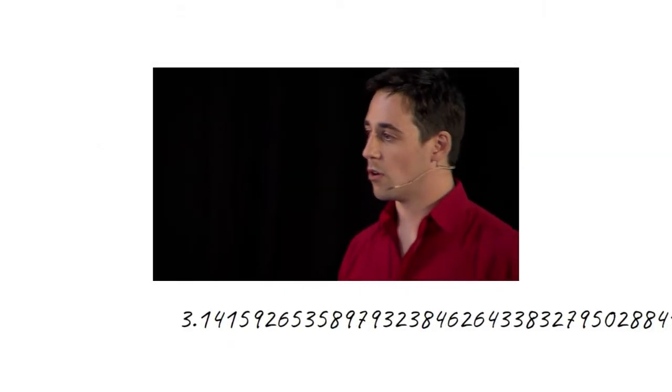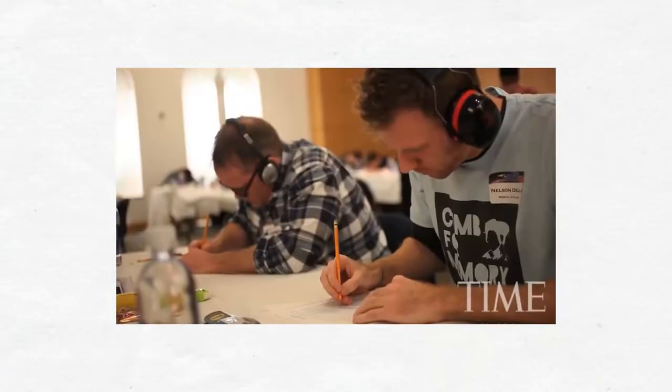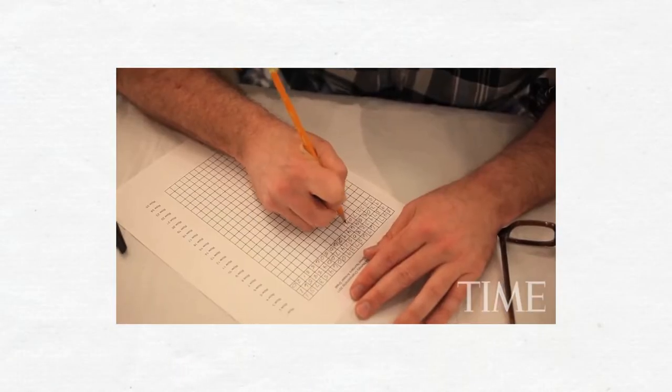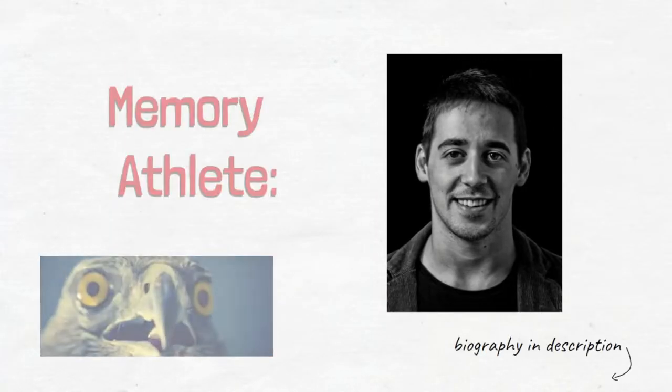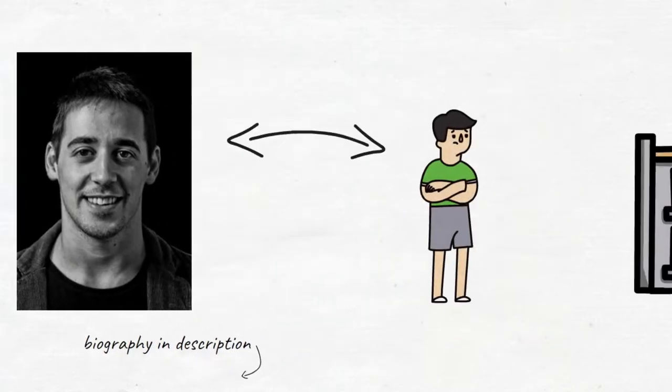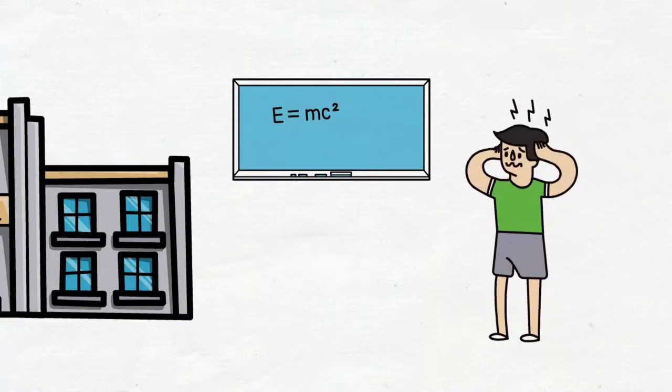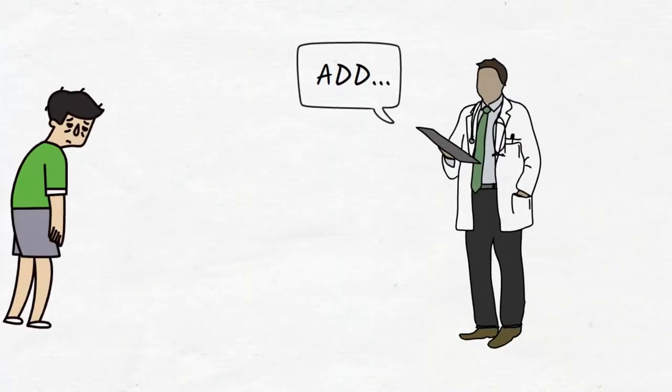Daniel Kilov is a memory champion who can memorize a ton very fast. He won medals in the Australian Memory Championships. But what is most surprising about this man is how he ended up a memory athlete at all, considering his history. He sucked at school, couldn't focus, and was eventually diagnosed with attention deficit disorder.